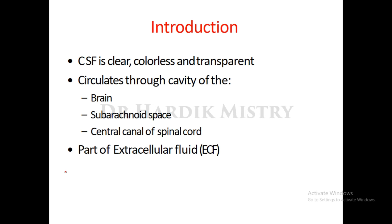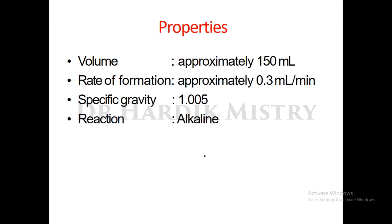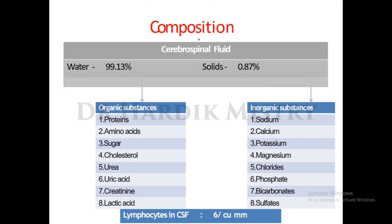Today we begin with cerebrospinal fluid. CSF is a clear, colorless, and transparent fluid. It circulates through the cavity of the brain, subarachnoid space, and central canal of the spinal cord. It is a part of extracellular fluid. Properties of CSF: volume approximately 150 ml, rate of formation approximately 0.3 milliliter per minute, specific gravity 1.005, and reaction alkaline.